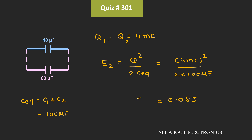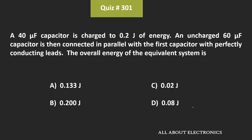That means after the connection of the second capacitor, the overall energy of the entire system is equal to 0.08 J. Hence, we can say that for the given question, D is the correct answer.